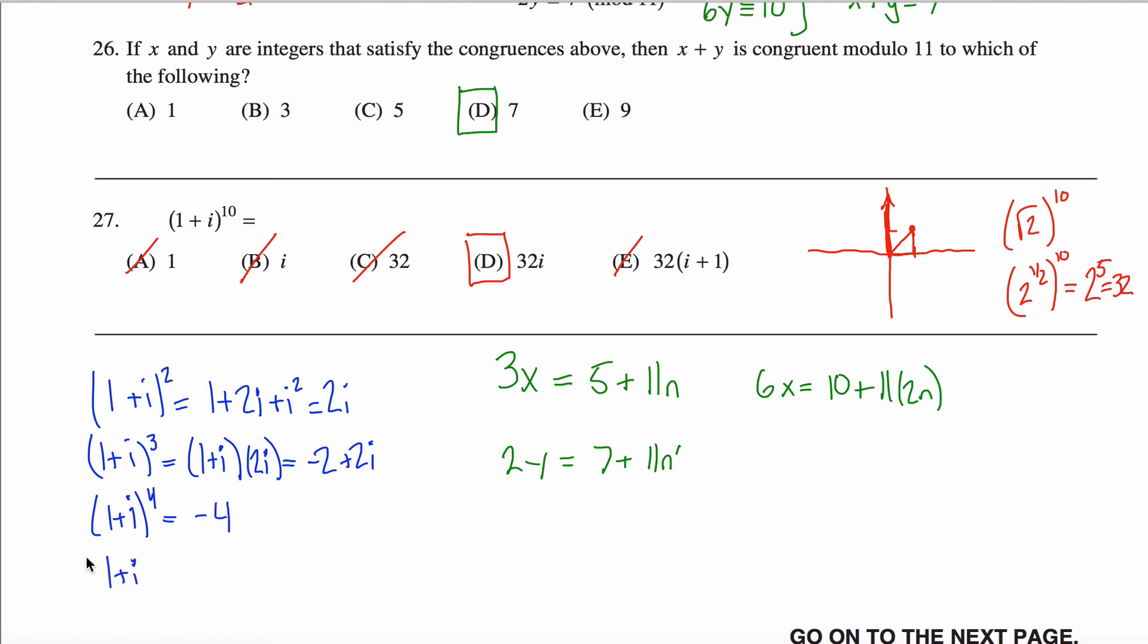And then 1 plus i to the fifth power, I think if you get this far, you'll be able to see the pattern if you don't already. This is negative 2 times 1 minus i to the fifth power, I get the fourth power times the first power, so I get negative 4 times 1 plus i.